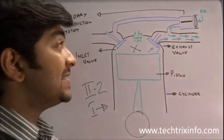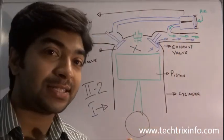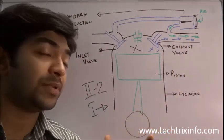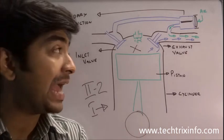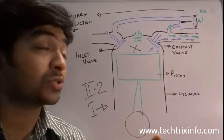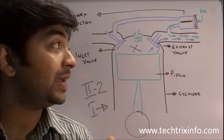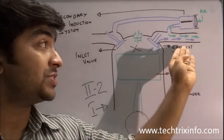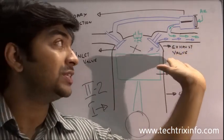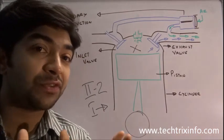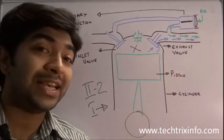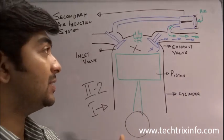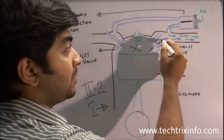This is where the secondary air induction system comes into play. Its function is to reduce the percentage of pollution through the exhaust. Under Euro 2 standards, the government requires a reduction in the amount of exhaust gas — which contains carbon dioxide and NOx — getting into the atmosphere. The amount of pollutants needs to be reduced.